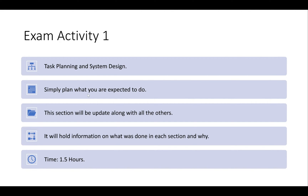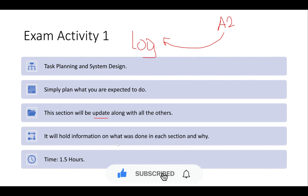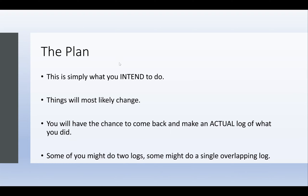Activity one — task planning and system design — is essentially a daily log of everything you're doing. You'll keep coming back to it throughout the exam. After completing day one's activity one entry, you move on to activity two, then return to the log to record what you did, what went well, what didn't, and how you fixed issues. Activity one holds information on what was done in each section and why, so you need to justify your decisions. Time allocated is roughly 1.5 hours total, built up across the exam days.